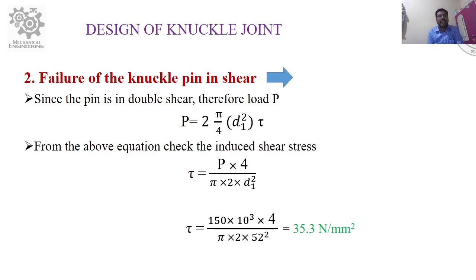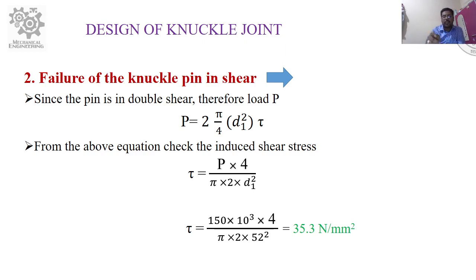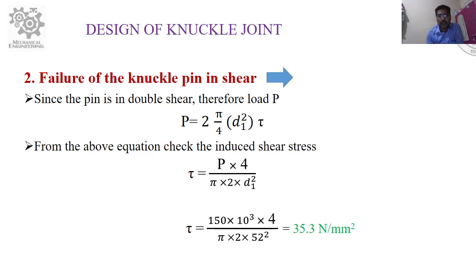Step two: Failure of the knuckle pin in shear. Since the pin is in double shear, P = 2 × (π/4) × d₁². Checking the induced shear stress: τ = (P × 4) / (π × 2 × d₁²) = (150 × 10³ × 4) / (π × 2 × 52²) = 35.3 N/mm². This is well within the allowable shear stress of 60 N/mm².